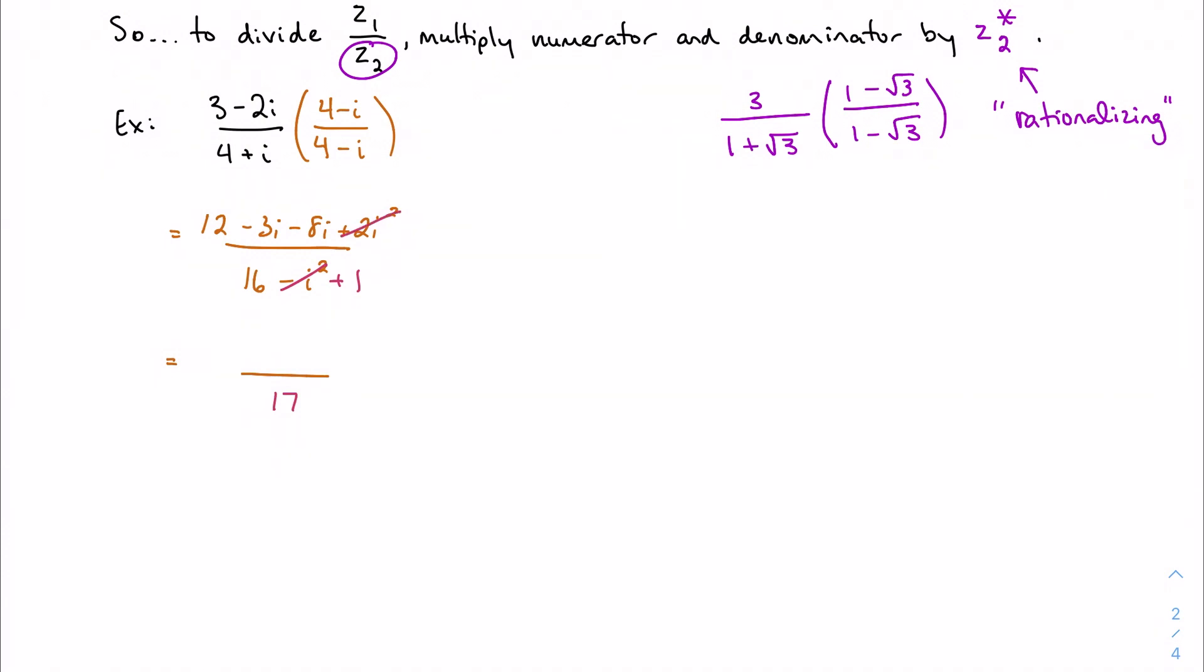Plus 2i squared becomes negative 2—two times negative 1—so I get 10 minus 11i divided by 17. There is my division. In this case there's nothing I can cancel out; I don't have a common factor in all three terms. So there is my final answer: multiply by the conjugate and multiply carefully.